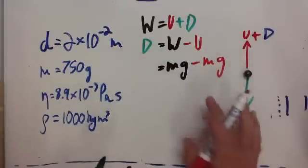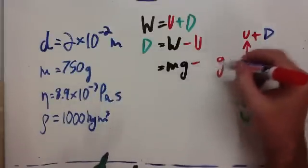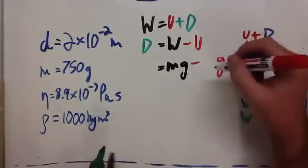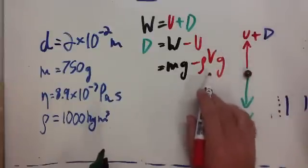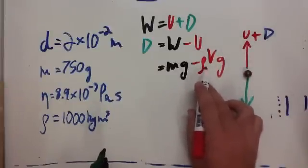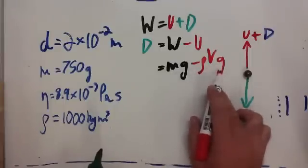But we have no mass for the fluid. But we do have the density of the fluid. And because density equals mass times volume, if we times the density times the volume of the sphere, so all we've done is taken out the mass and replaced it with density times volume times g. That should give us the weight of the fluid.